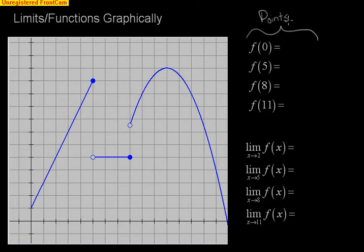All I'm asking are the points on the graph. So f of 0, I'm going to look at the x value 0 and I see the y value is 1. For f of 5, I'm going to go 1, 2, 3, 4, 5, and I'm going to see that all the way up here, 1, 2, 3, 4, 5, 6, 7, 8, 9, 10, 11.